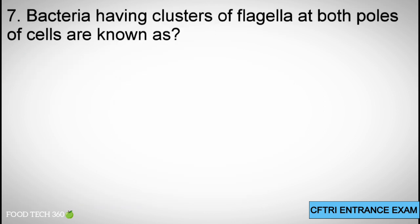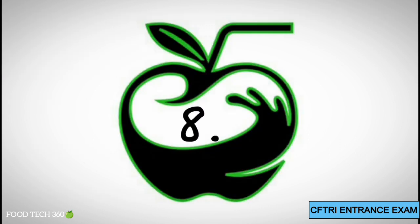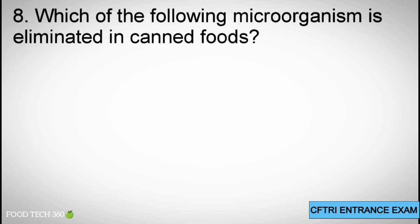Question 7: Bacteria having clusters of flagella at both poles of cells are known as: A. Amphitrichous, B. Monotrichous, C. Peritrichous, D. Lophotrichous. Correct answer: A. Amphitrichous.